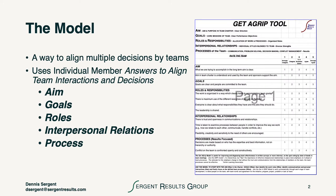The model is pretty simple. It's, in essence, a form that we start using to align our many decisions by the team. We use individual team member answers to align the team interactions and decisions, and we use this form to simply score every person's thinking on where we're at with respect to these critical areas.